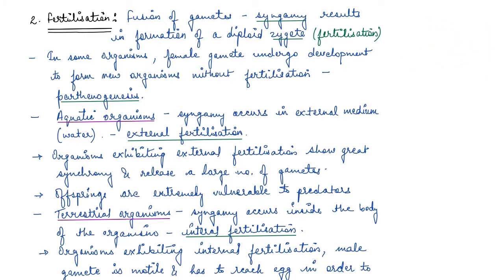Fertilization is the most vital event of sexual reproduction. What happens is fusion of gametes — the male gamete, which is the motile one, basically reaches the non-motile gamete which is the female one. This process of fusion of gametes is known as syngamy, and it forms a diploid zygote through fertilization.